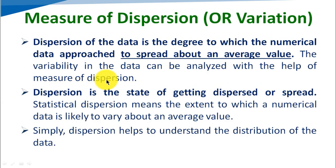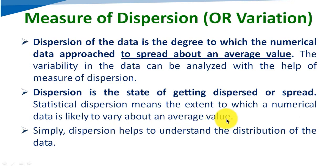With the help of these types, we can study how the data has been spread. Statistical dispersion means the extent to which numerical data is likely to vary about an average value. Generally, if we have any data, we can use mean, median, or mode. In the next video, we can see how the average value is spread.